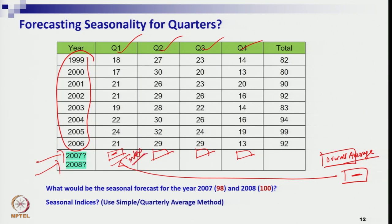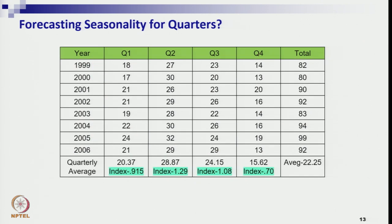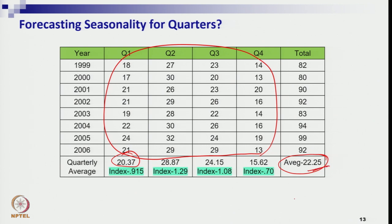So we have calculated: step one is the average of each quarter; then the overall average by taking all 32 data points (8 years × 4 quarters) together. You divide the quarter average by the global average to get the index — 91% here, 1.29 (30% extra) here, 8% extra here.